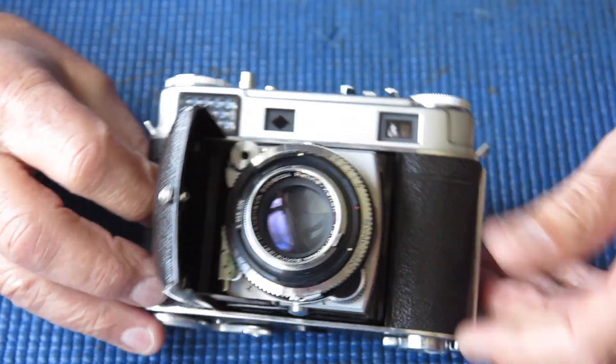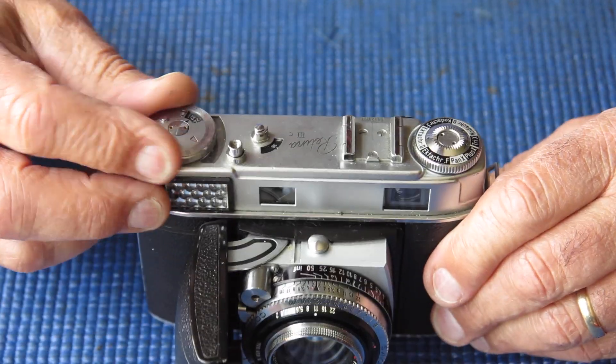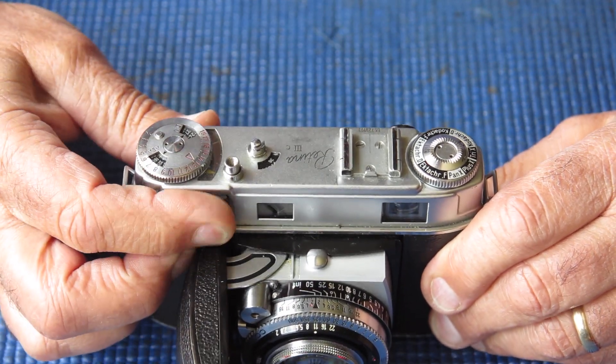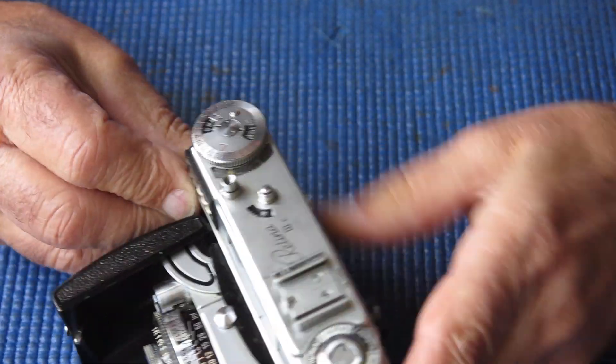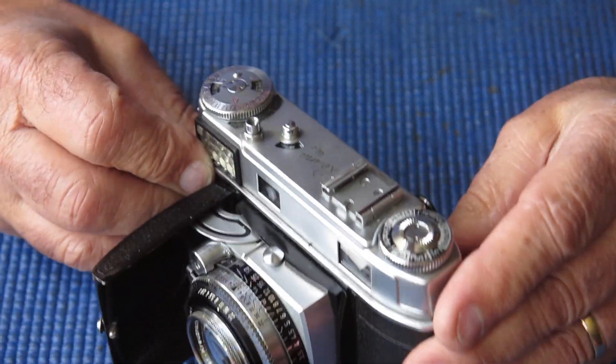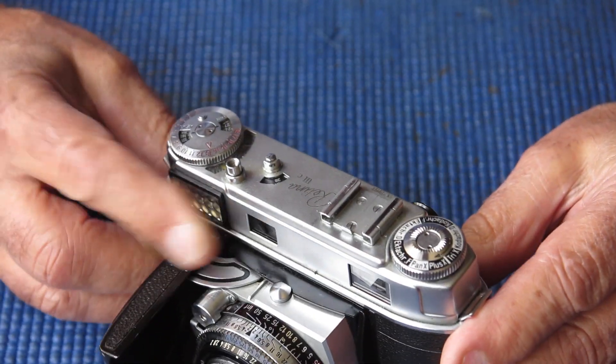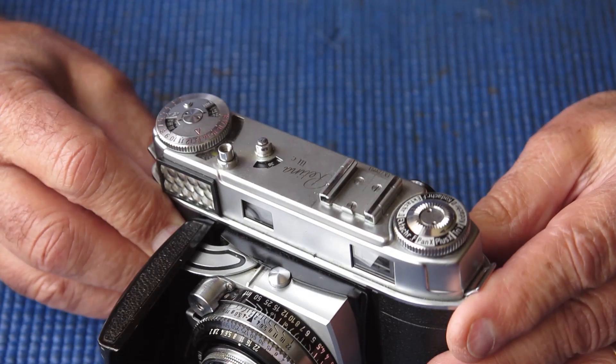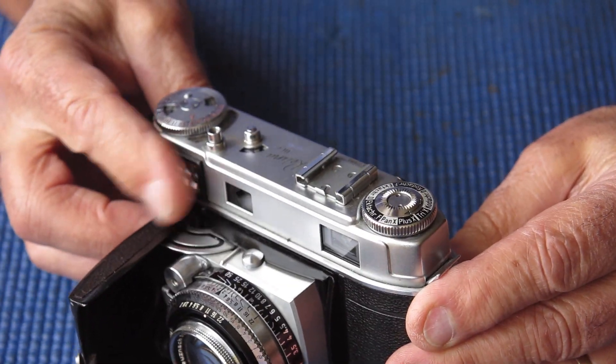This one was serviced a couple of years ago. The meter's gone dead on it. The meter needle does move, so it means that the movement is probably not off its pivots, but it's not responsive to light in any way.